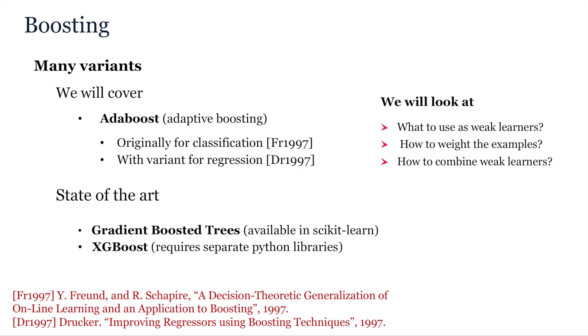Today, we will cover the AdaBoost algorithm as this was the first variant of the method which was proposed in the late 90s. In doing so, we will look at what to use as weak learners, we will also see how the algorithm weights the importance of examples at each iteration and how it combines predictions across base learners at the end to make a final prediction.